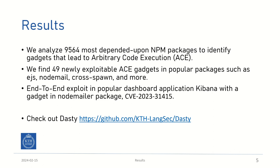In our experiment, we analyzed over 9,000 of the most depended-upon NPM packages. Our analysis finds 49 newly exploitable arbitrary code execution gadgets in many popular packages, such as EJS. We then use one of the found gadgets in the NodeMailer package to show a full end-to-end exploit, from the prototype pollution to the arbitrary code execution.